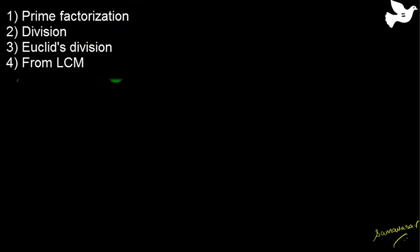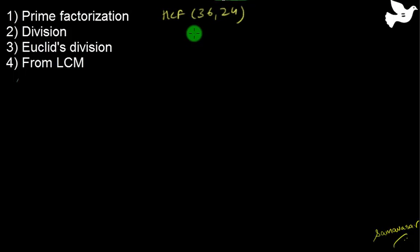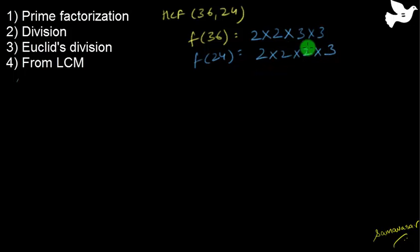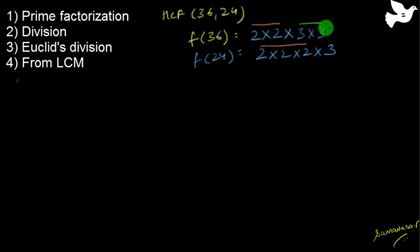We have four methods. The first is the prime factorization method. I am trying to find out the HCF of 36 and 24. I list down the prime factors of 36, which is 2 × 2 × 3 × 3. Similarly, I list down the factors of 24, which is 2 × 2 × 2 × 3. Now when finding the HCF, I will make groups — a group of 2s and a group of 3s.